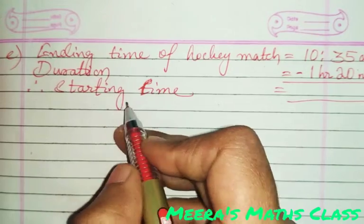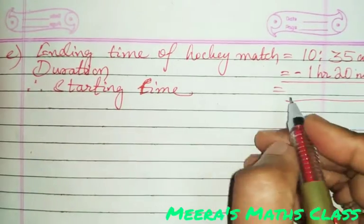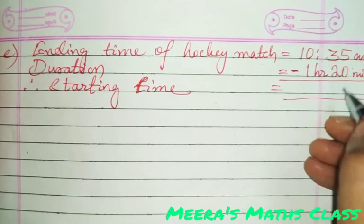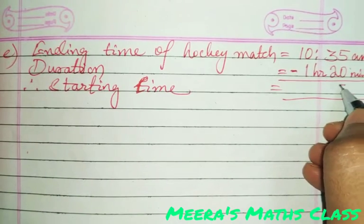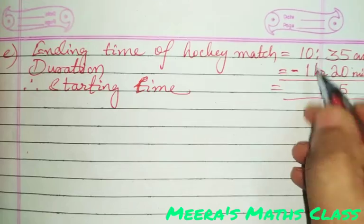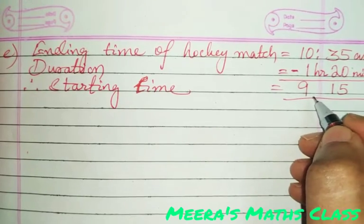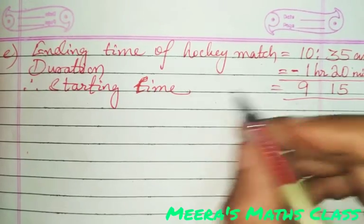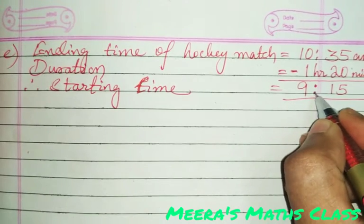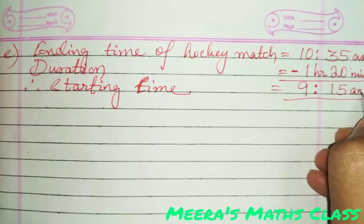Therefore, you have to find the starting time. Starting time equals ending time minus duration. So: 5 minus 0 is 5, 3 minus 2 is 1, 10 minus 1 is 9. The starting time is 9:15 AM.